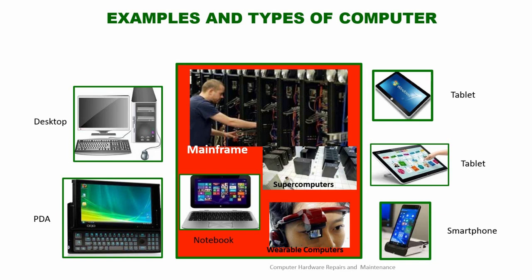We have examples and types of computers. We have mainframe computers, supercomputers, and microcomputers. Mainframe computers are those large computers used in industry or military systems. Supercomputers are also used in very sophisticated electronic work. Microcomputers include desktop computers, PDAs (personal digital assistants), network computers, wearable computers like smartwatches, tablet computers, and smartphones. All these are examples of microcomputers.